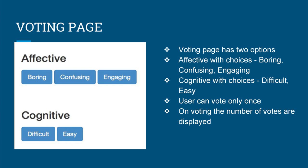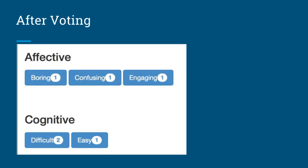On the voting page we have included the two aforementioned options of affective and cognitive feedback. For affective, we have three choices — boring, confusing, and engaging — which specify the overall quality of the content. For cognitive, we have difficult and easy, which summarize the difficulty level. Each voter can vote only once for both options, and once voting is done, the total number of votes for each choice is displayed. For example, if I vote boring for affective and easy for cognitive, it will show that one person voted the content as boring and one as easy.